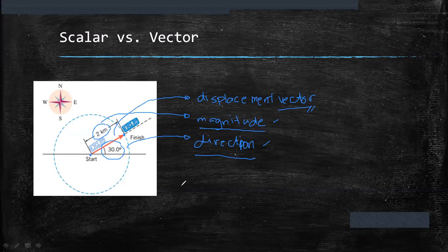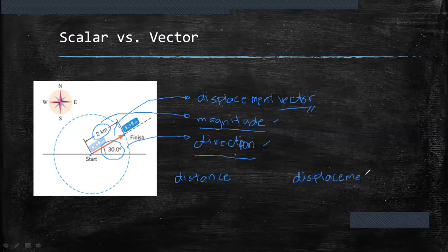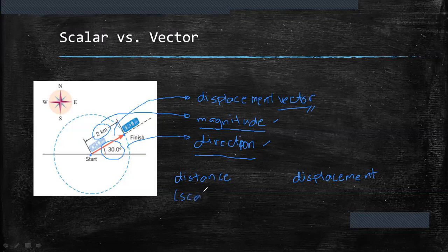A good example of the difference between scalar and vector is distance and displacement. Distance is a scalar quantity, while displacement is a vector quantity.